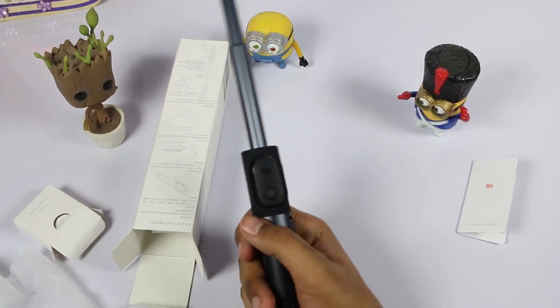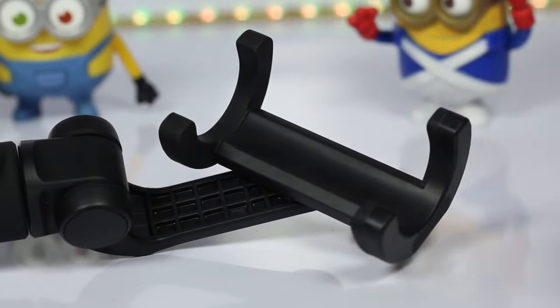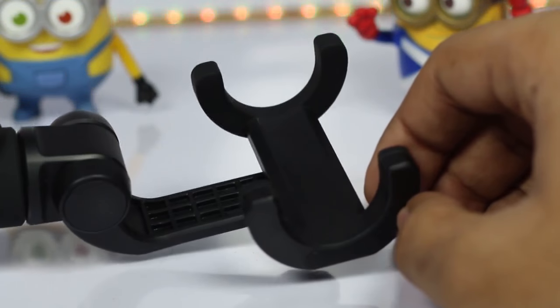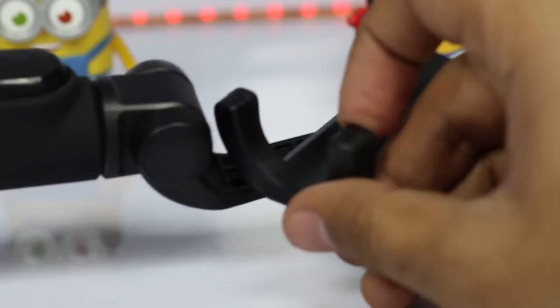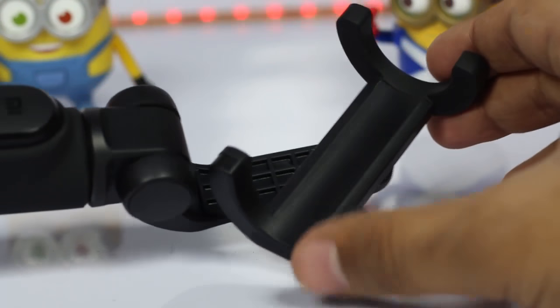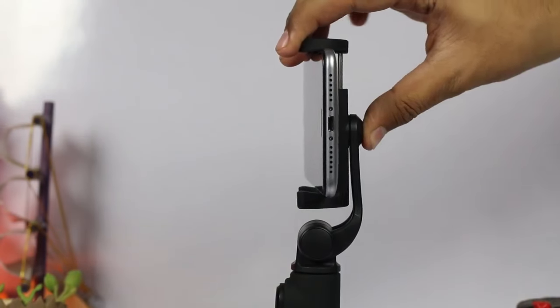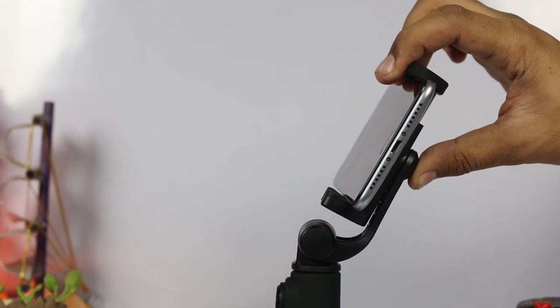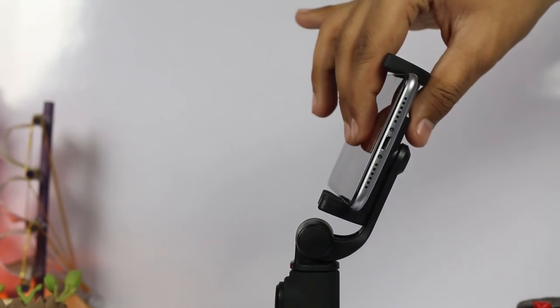In this new stick from Xiaomi, we also get a 360-degree rotating stand holder for any kind of phone. I have tried installing many phones—recently in this video, I inserted the Gionee A1, which fits perfectly. We can also insert a 6-inch device like the C9 Pro from Samsung.